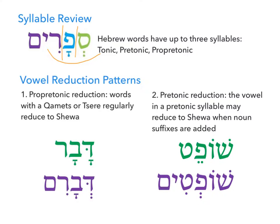Right before the tonic syllable, we have a syllable one step back — that's the pre-tonic syllable. And one step further back is the pro-pre-tonic. Most often our Hebrew words consist of up to three syllables, with an accent on the final syllable, and then we work our way back to the pre-tonic and pro-pre-tonic.